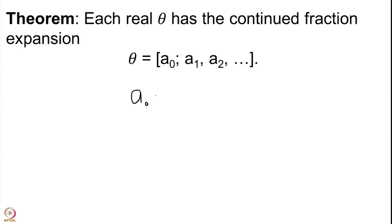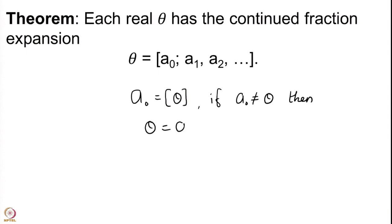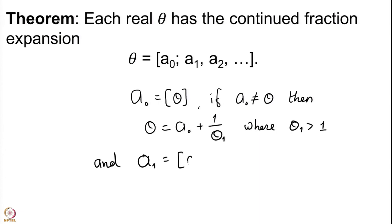Here we have that a0 is the integral part of theta. If a0 is not equal to theta, then theta is a0 plus 1 upon theta1, where theta1 is now bigger than 1, and we defined a1 to be the integral part of theta1. This is the way we continued, so a0, a1, a2, and so on gives us a continued fraction expansion for the real number theta.